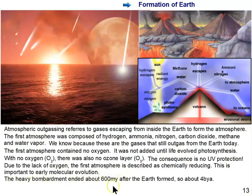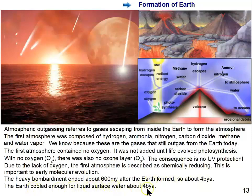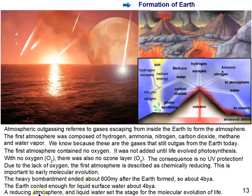The heavy bombardment ended about 600 million years after the Earth formed — approximately 4 billion years ago. The Earth cooled enough for liquid water and we had oceans. Combined with the reducing atmosphere, these conditions together allowed for the molecular evolution of life — for the molecules that make up living things to come together and form living things.